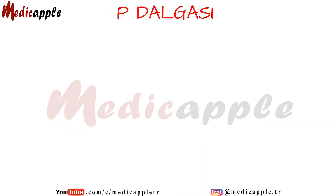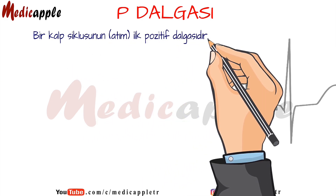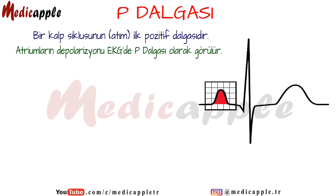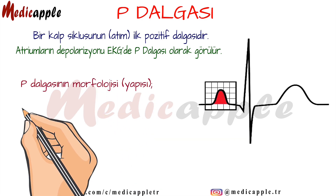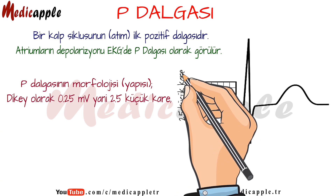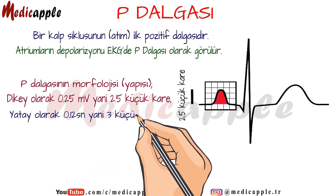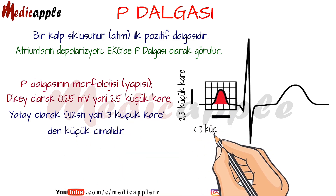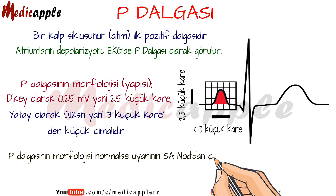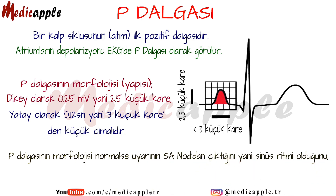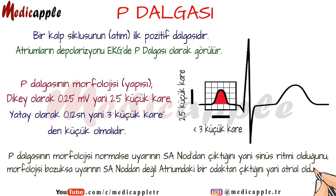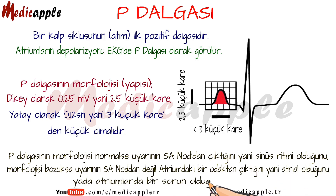P wave. It is the first positive wave of a heartbeat. Atrial depolarization appears as a P wave on the ECG. The morphology of the P wave should be 0.25 mV (2.5 small squares) vertically, and less than 0.12 seconds (3 small squares) horizontally. If the morphology of the P wave is normal, it indicates that the stimulus is coming from the sinoatrial node — that is, it is sinus rhythm. If its morphology is distorted, it indicates the stimulus is coming from a focus in the atrium, not the SA node, or there is a problem in the atria.